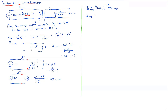To find the voltage across our load, we use a voltage divider. The voltage across the load is the source voltage times the load impedance divided by the sum of the load impedance plus the source impedance. Plugging this into the calculator gives us 48 − j24 volts RMS.